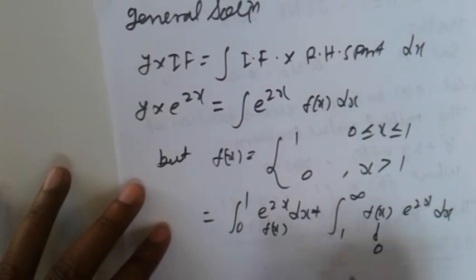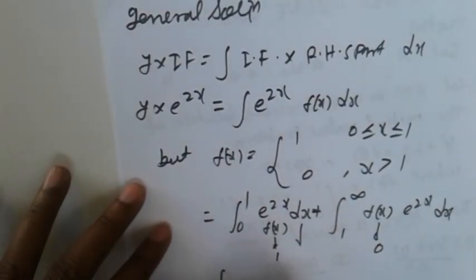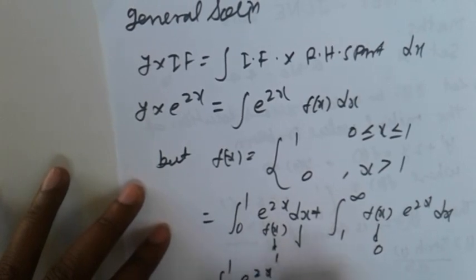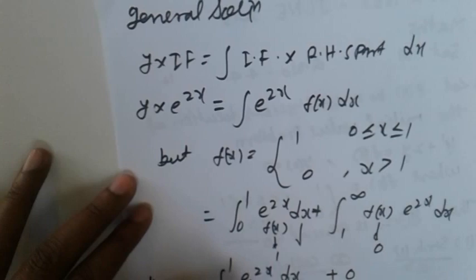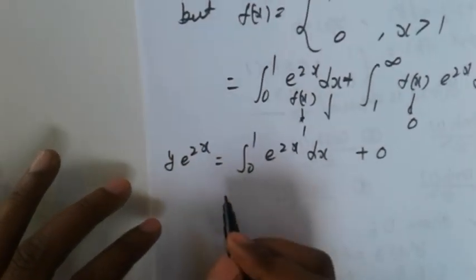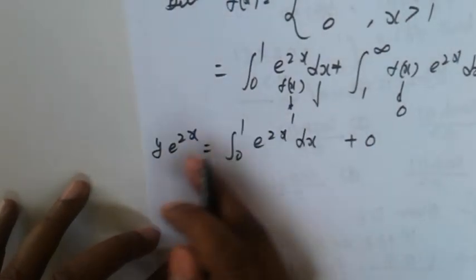That portion where x > 1 gives 0, so we get integral from 0 to 1 of e^(2x) dx plus 0. The left-hand side is Y times e^(2x), so this portion is clear.